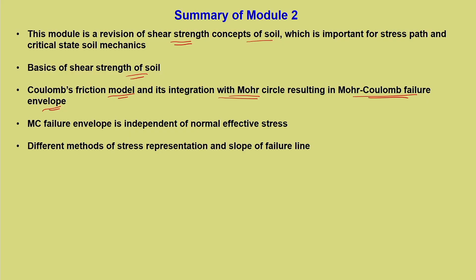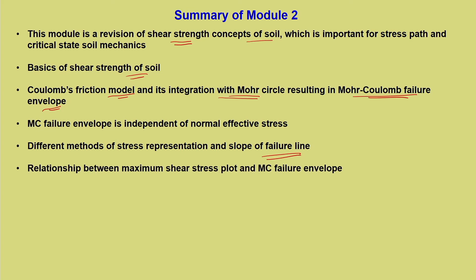Different methods of stress representation and slope of failure line have been determined. The relationship between the maximum shear stress plot and the Mohr-Coulomb failure envelope — the ST or TS dash plot, which is (sigma 1 dash + sigma 3 dash)/2 versus (sigma 1 dash − sigma 3 dash)/2 — has been established. The relationship between that plot and the shear strength parameters C and phi has been determined. This is quite handy because one can always find out C and phi without plotting the Mohr circle.